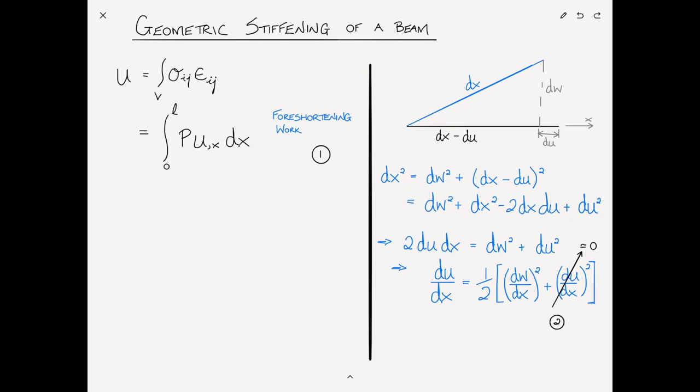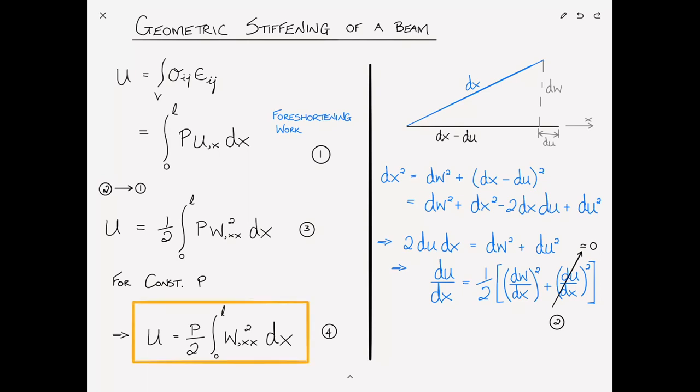We'll number this equation 2, and then substituting equation 2 into equation 1 yields U equals one half the integral from 0 to l of p (w,x)² dx, and that is equation 3. And then we can make the assumption that if p is constant, we can bring it outside of the integral and rewrite this as U equals p over 2 times the integral from 0 to l of (w,x)² dx. We'll number it equation 4 and put a box around this intermediate solution.